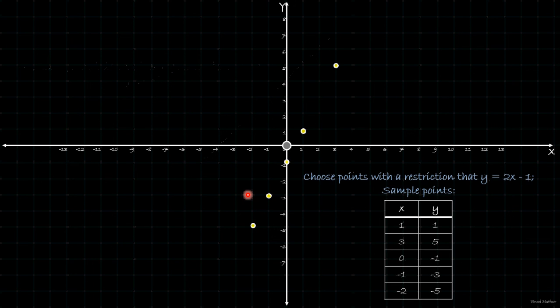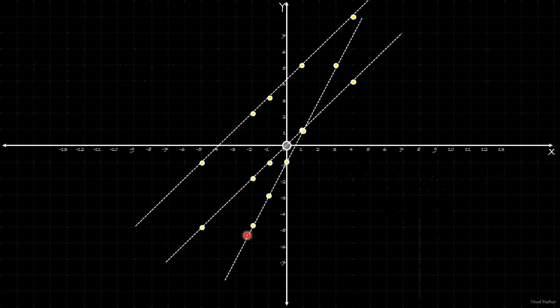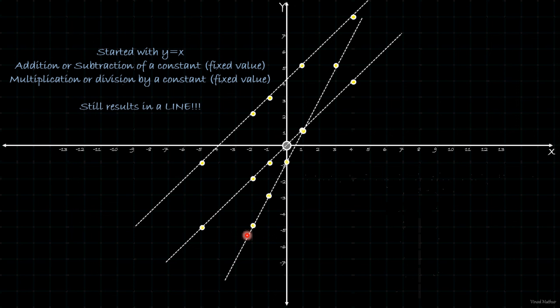Let's try multiplying x with something. If I say y is 2x minus 1, so if x is 3 then y is 2 times x minus 1, that is 5. Similarly if I plot these sample points, they fall into a straight line. We started with y is equal to x, we added some fixed values, we also multiplied by fixed values, subtracted fixed values. In all these cases we still end up in a straight line.